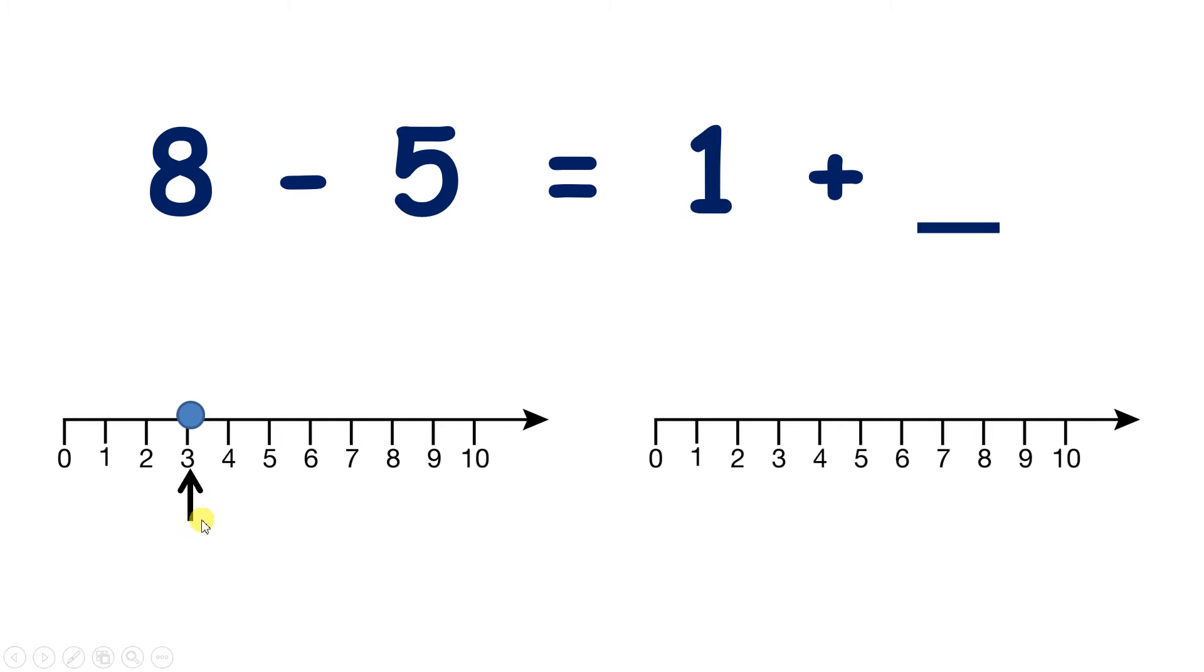But it's really important to remember that 3 is not the answer to our question. I can't write a 3 in that missing number box. So pause the video and see if you can think about that and explain, why can't I write a 3 in this missing number box over here? Because I've got a 3 on my number line down here, but I can't write 3 here, why not?